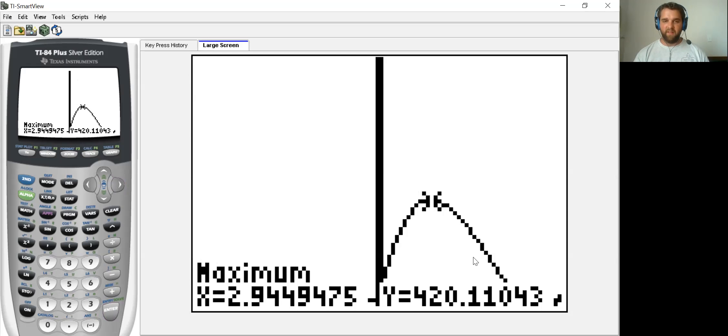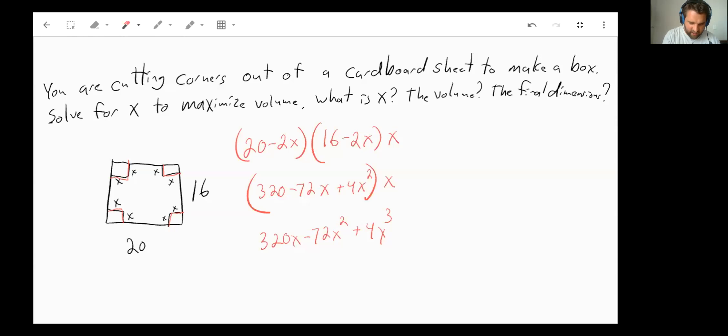The question asked, then, what is x? Well, x is 3, or about 2.9. What is the volume when you cut that out? Well, it's going to be about 420, because the volume was our y value in this case. So the final dimensions, then, I'll bring you back for this. Since we know that x is 3, that means 20 is subtracting two sets of 3, so that'd be 20 minus 6 is 14. 16 minus 6 would give us 10, so it's going to be a 14 by 10 by 3 box.